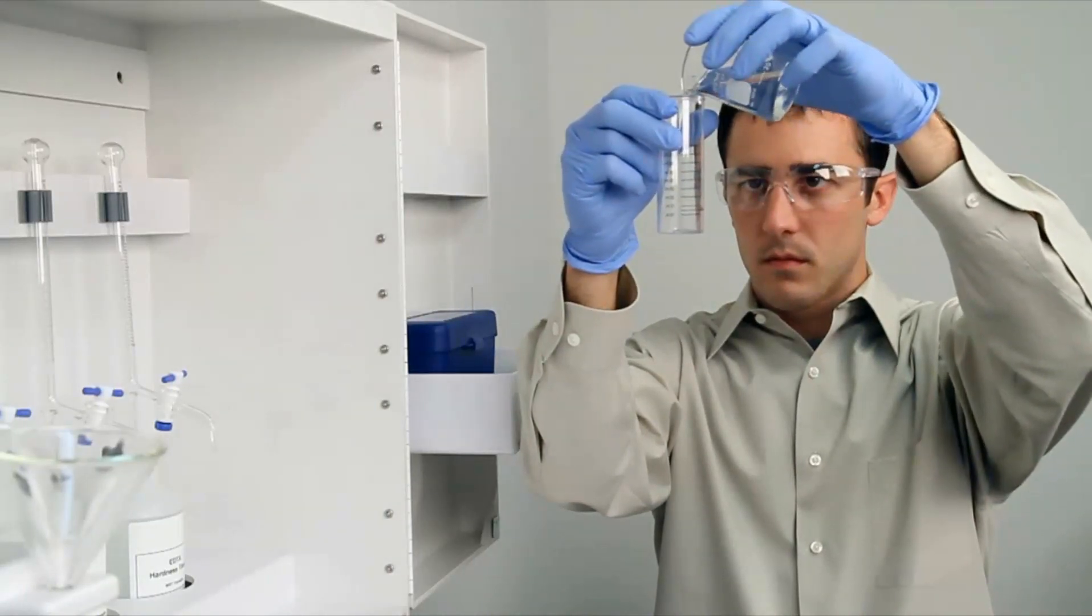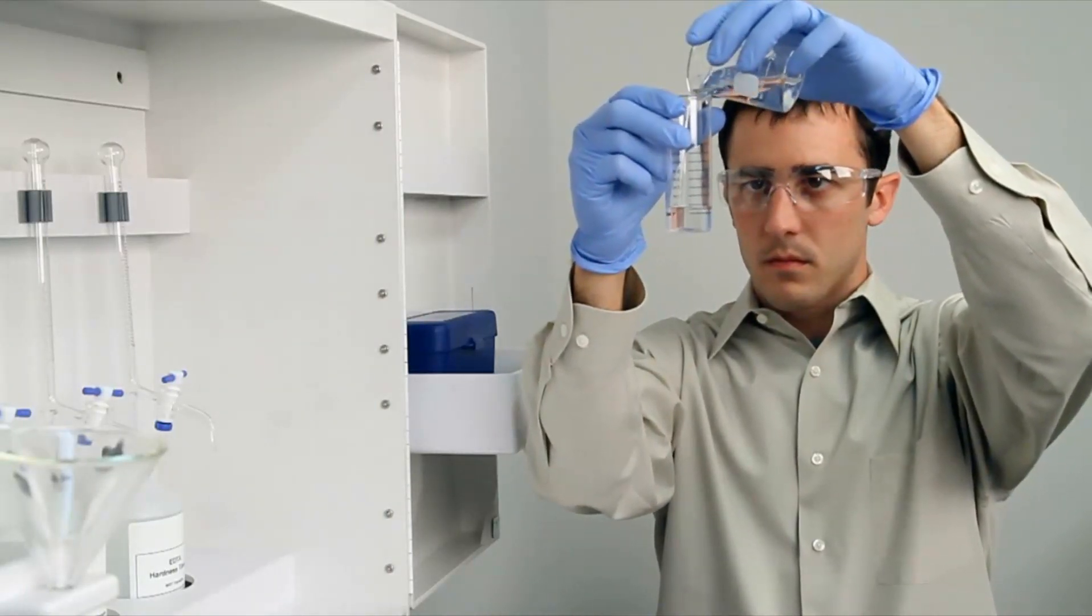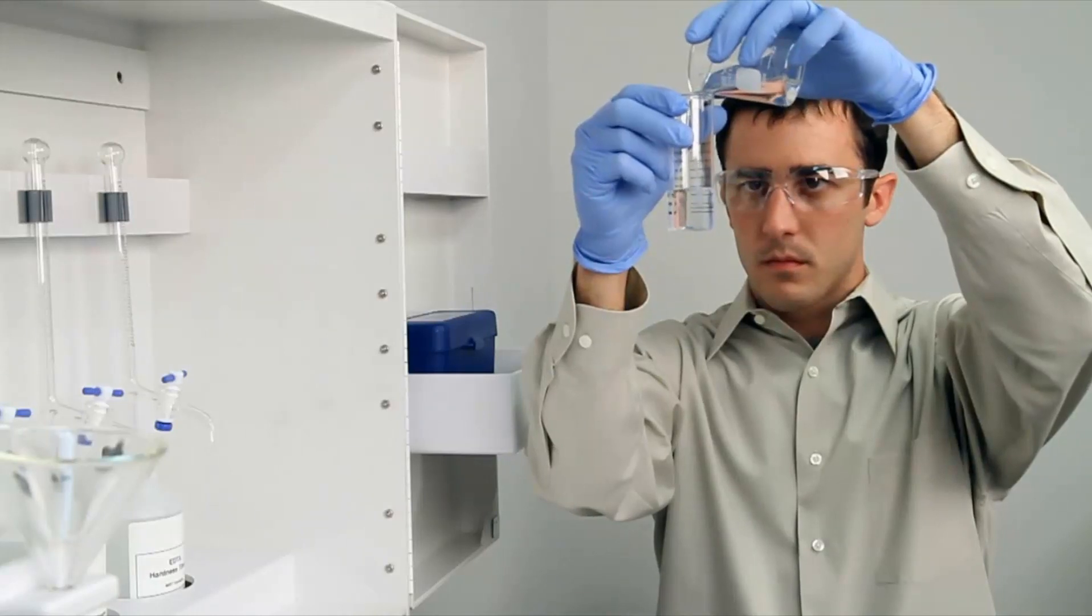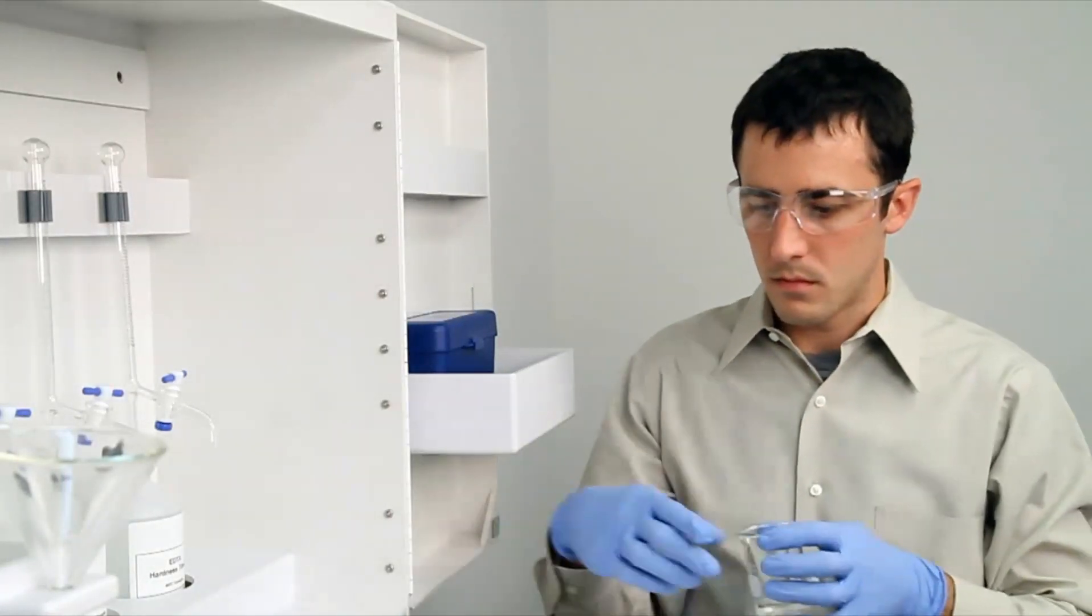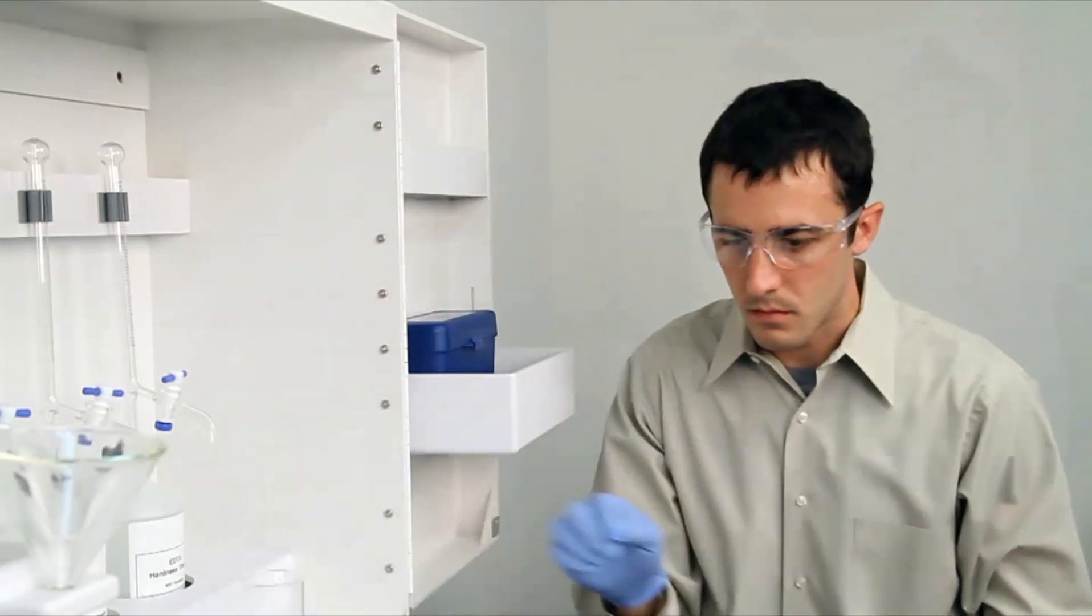To get an accurate sample size, you want to hold the vial close to eye level. Once you feel you have an accurate sample, place the vial on a level surface and bend down to eye level.